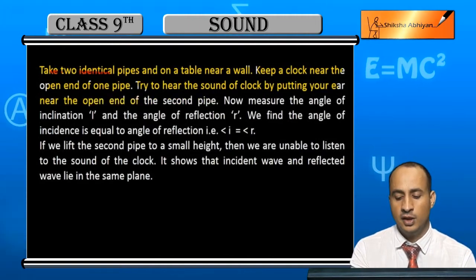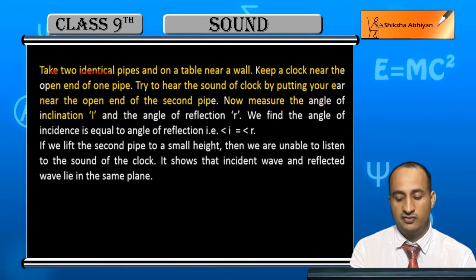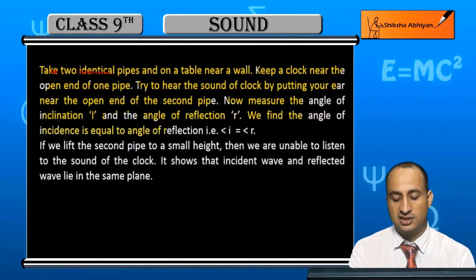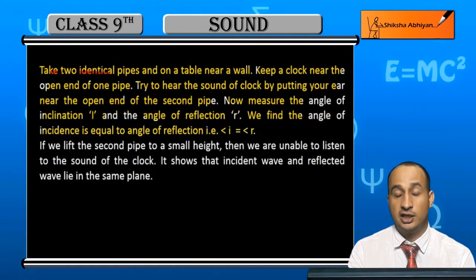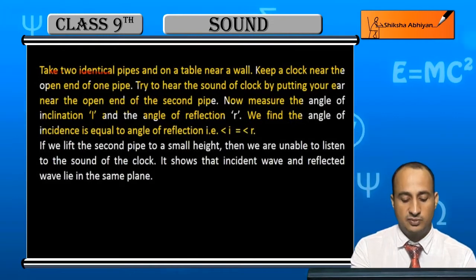Measure the angle of inclination i and the angle of reflection r. We find the angle of incidence is equal to angle of reflection, i.e., angle i equals angle r. In this case, these two incident and reflection angles are equal, the first law of reflection.